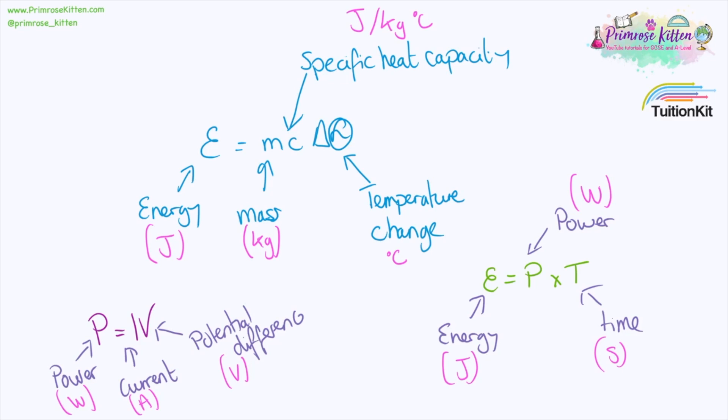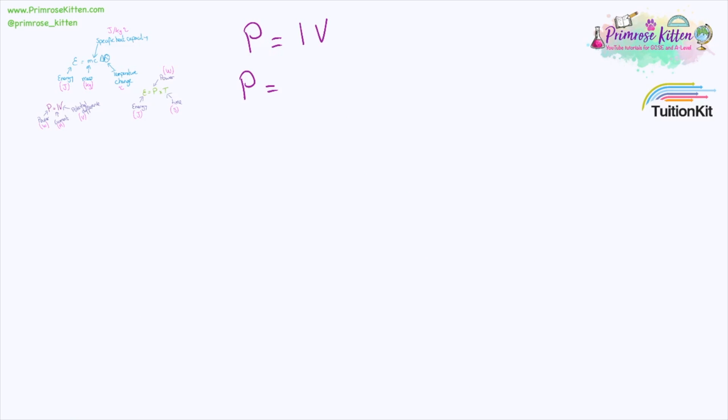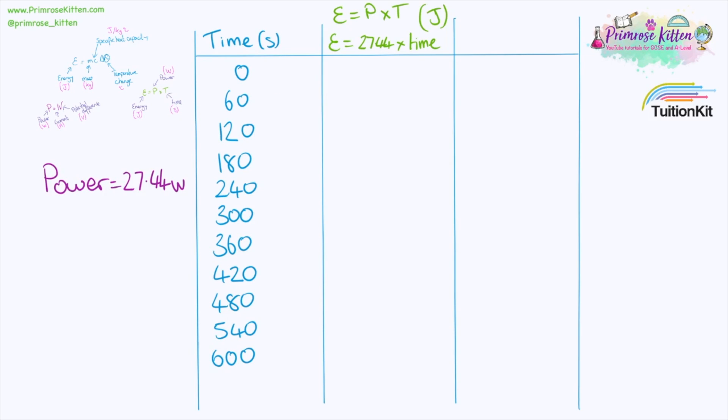I know there are lots of equations on this page and maybe this looks a bit more complicated than it did in school but I'm going to break this down for you. We saw from our experiment that we had a current of 2.8 amps and we had a potential difference of 9.8 volts giving us power into the system of 27.44 watts. Now we've used this equation here to work out the power. We can use this equation over here to work out the energy.